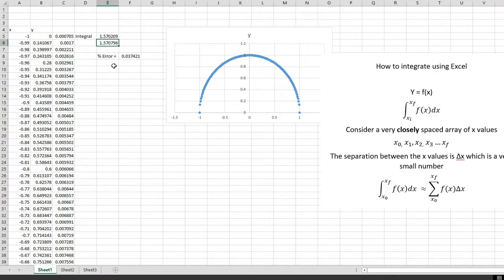And we compare it to pi over 2. This is pi over 2. And the difference as a percent, the absolute difference is 0.037%. It's not great, but it's not bad.